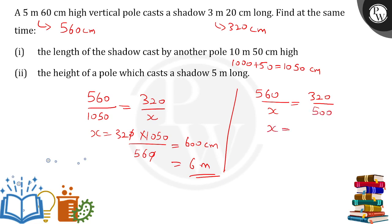So from here, x can be simply calculated as 560 multiplied by 500 divided by 320. So we can do the calculation over here.